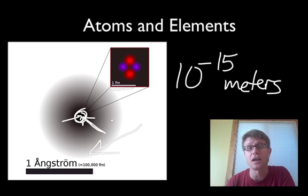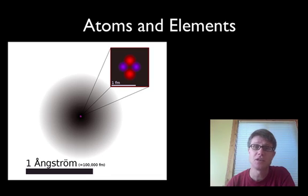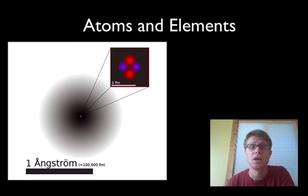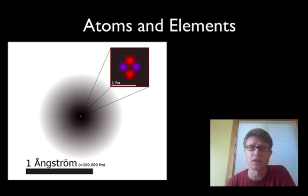So in this podcast what I'm going to talk about is the history of atoms — how it came to be known that there exists an atom. And then finally we'll talk about what are protons, neutrons, electrons, and then how they are organized.